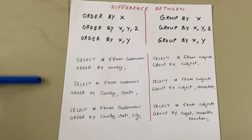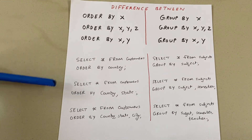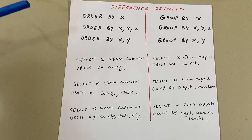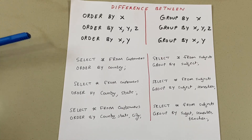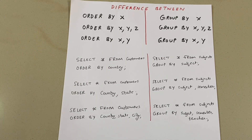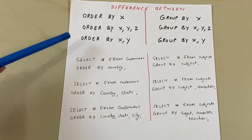So first you will sort your output in the order of country. After that, if the country is the same for certain customers, you will sort using state. And if the states are also the same, then you will use city to order it.